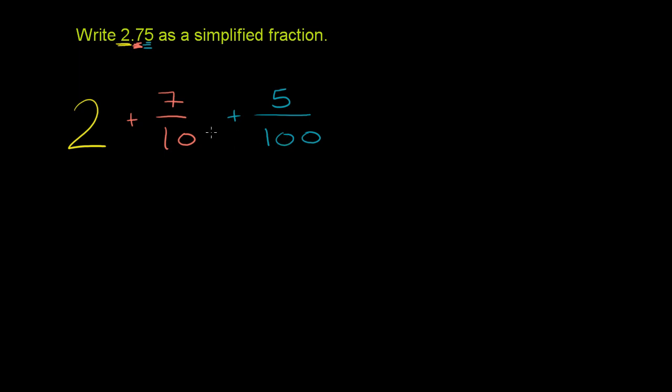100 is divisible by both 100 and 10. So let's get this 10 to be 100. We can do that by multiplying it by 10. When you multiply something by 10, you add a 0 at the end of it.